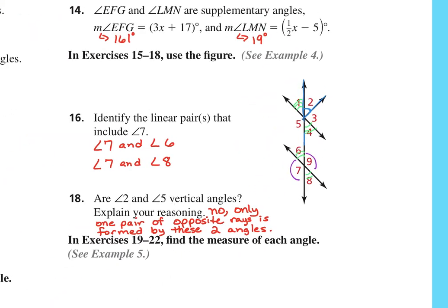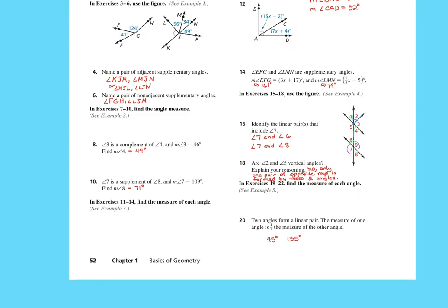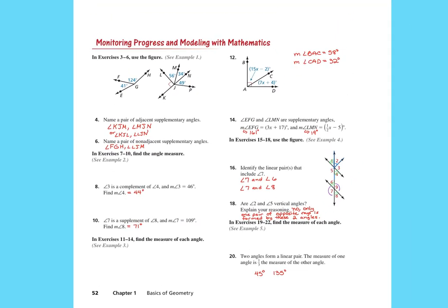Student asks about angles 7, 6, and 8 for linear pairs, which is fine. Another says 6 and 8 for linear pair. Teacher corrects: for a linear pair, angles 6 and 8 would have to be next to each other and form a line. Teacher notes the camera is recording the homework answers right now, starting with the first page.